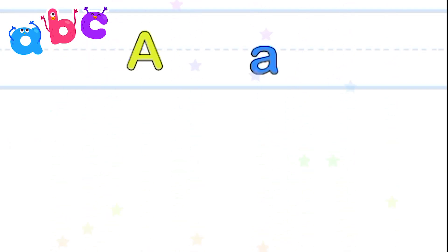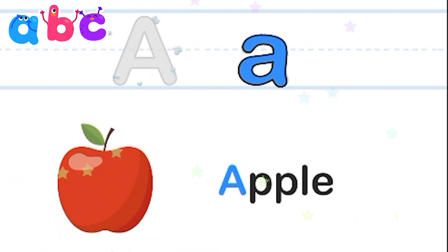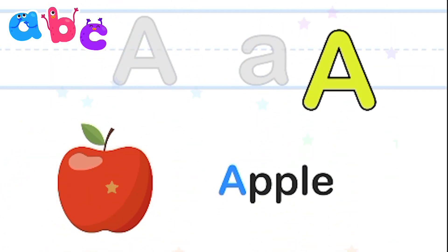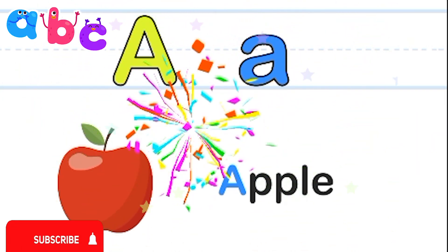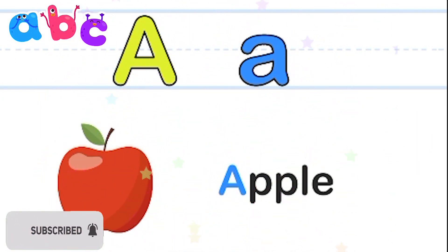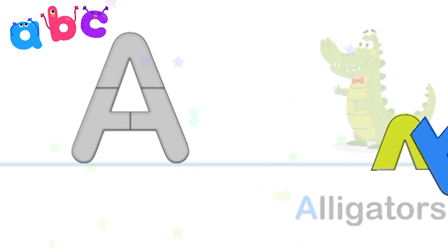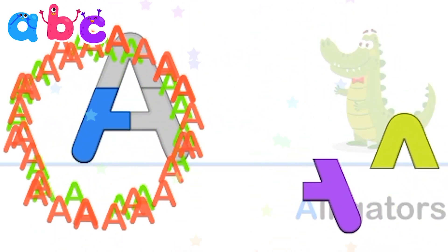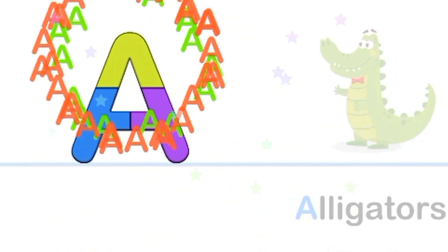Let's start. A is for apple. A is for alligator. Well done. Smart. Good job.